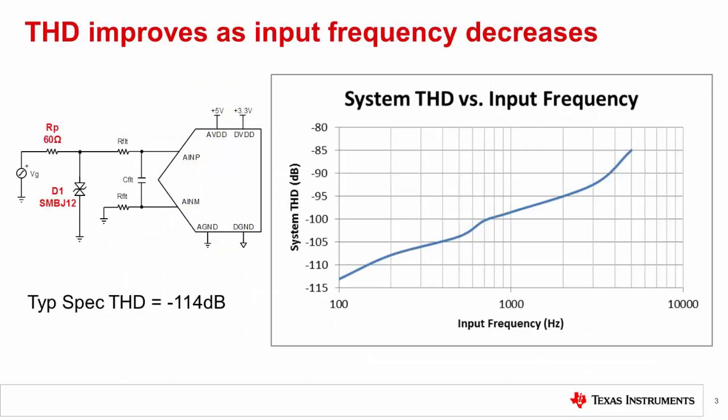RP and the capacitance of the TVS diode D1 form a low-pass filter. As the magnitude of the input signal changes, the capacitance of D1 changes instantaneously, and therefore the cutoff frequency changes instantaneously as well. This change in cutoff frequency will introduce distortion as the signal is attenuated differently depending on the instantaneous magnitude of the input signal. However, if the frequency of the applied signal is far less than the cutoff frequency introduced by the diode capacitance, then the distortion will be minimized.